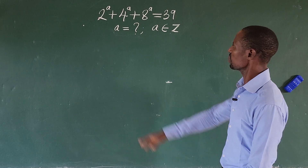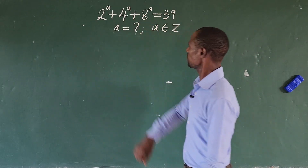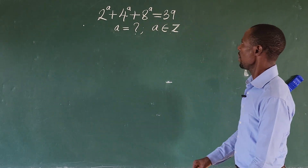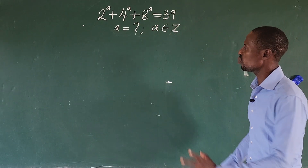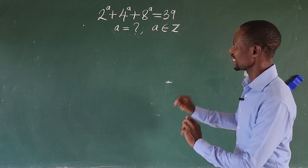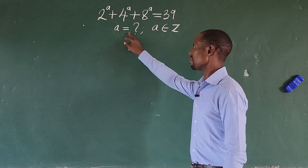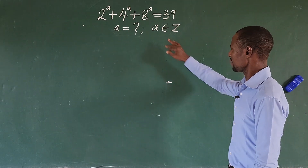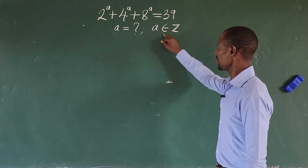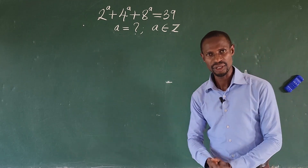The question is: 2 to the power of a, plus 4 to the power of a, plus 8 to the power of a, equal to 39. We are asked to look for the value of a, and the condition given is that a belongs to a set of integers.